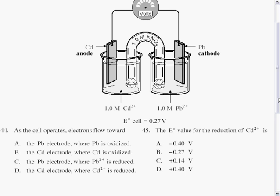Question 45. The E° value for the reduction of cadmium 2+ is either minus 0.40, minus 0.27, plus 0.14, or plus 0.40.